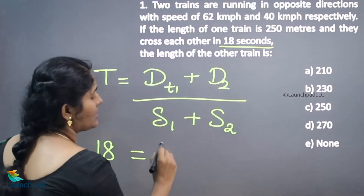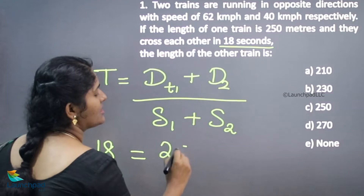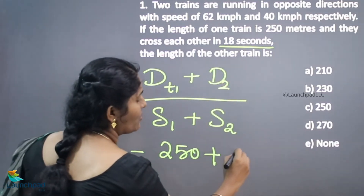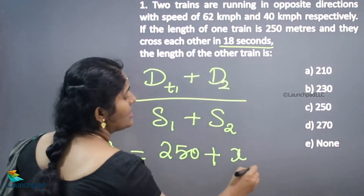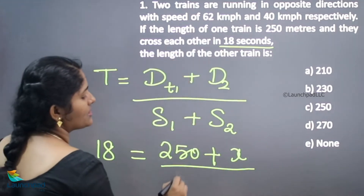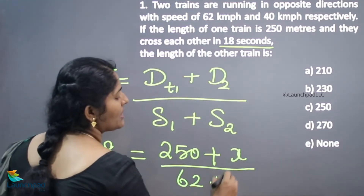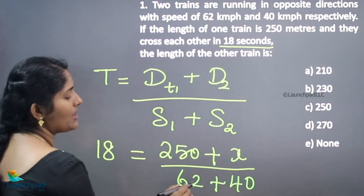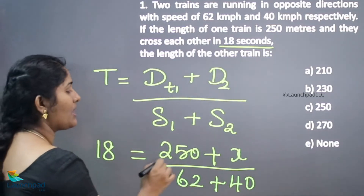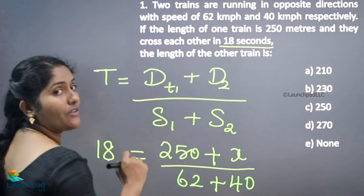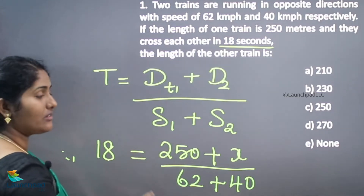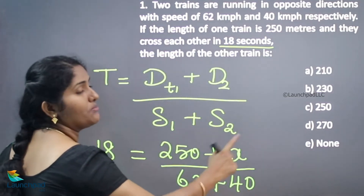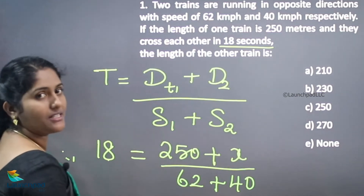The distance of the first train is 250 meters. The distance of the second train we don't know. The speed of the first train is 62 km per hour and the speed of the second train is 40 km per hour. Since we have seconds and meters, we need to convert kilometers per hour into meters per second.